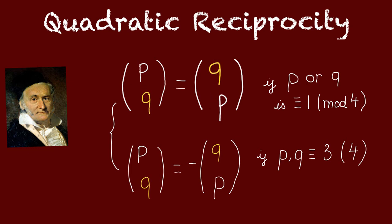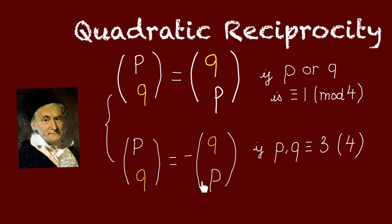It says that these symbols are gonna be equal if one of p or q is congruent to 1 mod 4. And they're gonna have opposite sign if p and q are both congruent to 3 mod 4.